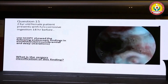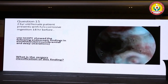This is the last question: a 23-year-old female patient presents with history of corrosive ingestion 18 hours before. This is the endoscopic picture of the esophagus. What is the Zargar classification of this finding? The endoscopic image is showing a circumferential deep alteration in the esophagus. This should help you write the Zargar classification.